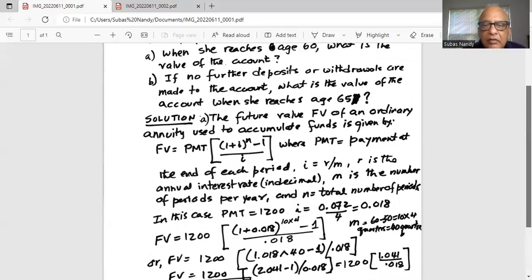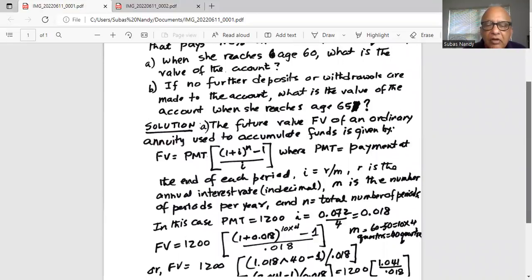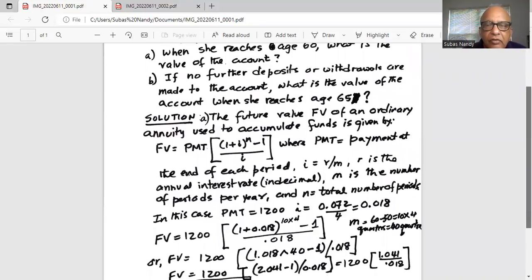This is the money for part A when she reaches age 60. What is the value of the account? It is $69,400.